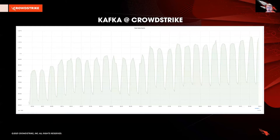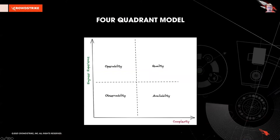At CrowdStrike, we process a truly enormous data stream of events, which currently tops more than a trillion events per day on average, and Kafka is at the core of this data processing ecosystem. In creating a comprehensive monitoring strategy for CrowdStrike's data processing pipelines, we found it helpful to consider four main attributes: observability, operability, availability, and quality. As illustrated here, we model these attributes along two axes — complexity of implementation and quality of the engineering experience — and this model enables us to classify these attributes into four quadrants.